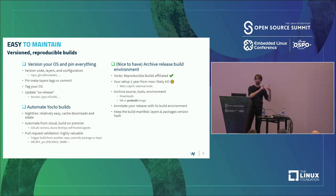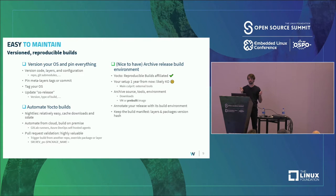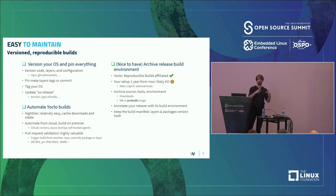The first point to accomplish that is to version your OS — pin everything. Use Git to version your metas, pin specific commits of everything, tag your OS versions, and override the OS release to provide a build time and indicate whether it's a production build, a production secure build, or different kinds of information — just to have that information available within your distribution.